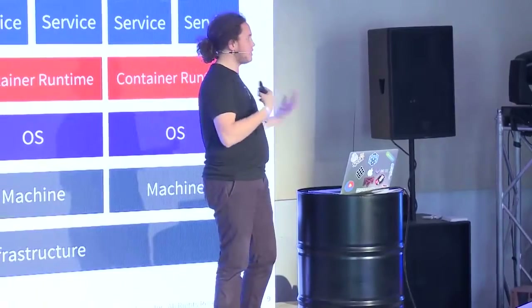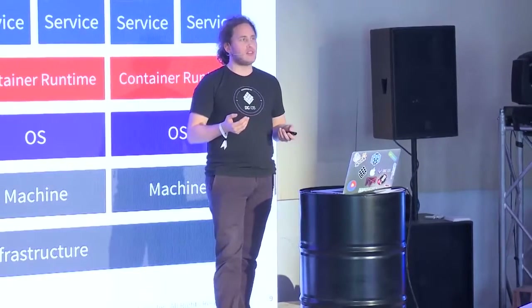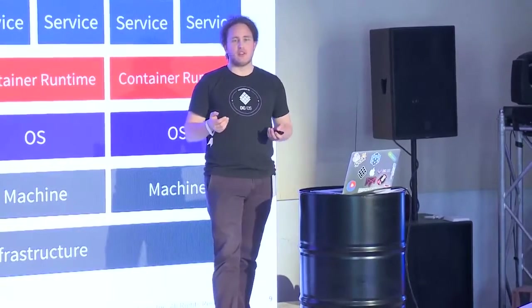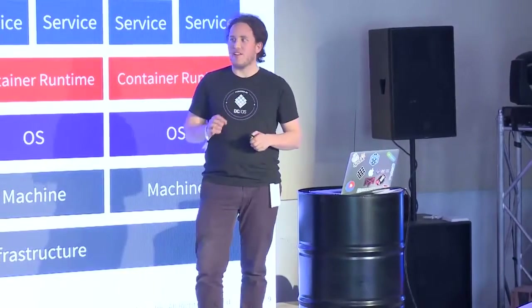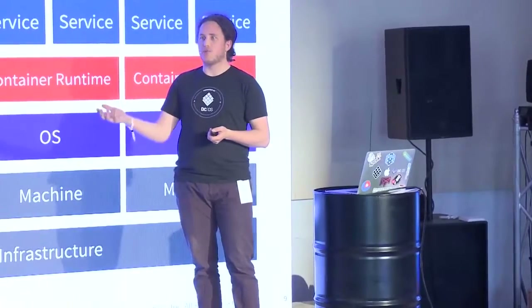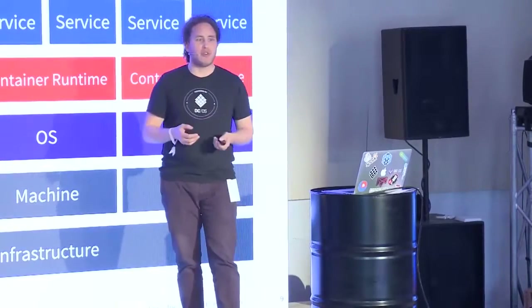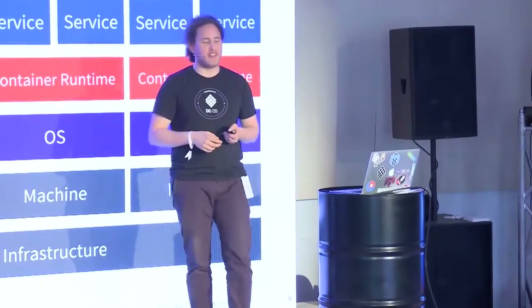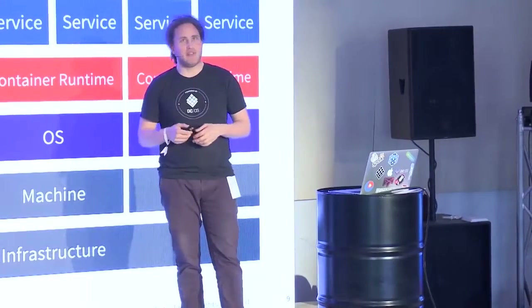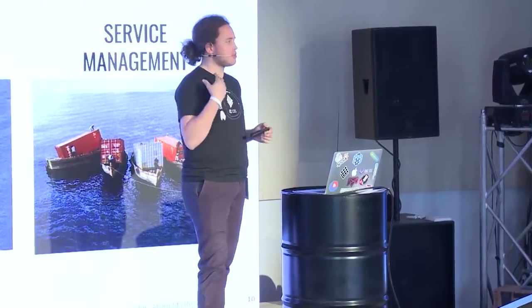That actually brings us to the next problem — we need more. Just running a container is not sufficient. If we look back at the early years at Twitter when they started using containers, they would meet every Friday and count the containers running in production. They expected, for example, 100 web servers running, and over the last week maybe five had failed. They would meet on Friday, restart five web servers, and do the same thing over and over. This doesn't really scale from an operational point. So we actually need more — and this is what we describe as container orchestration.